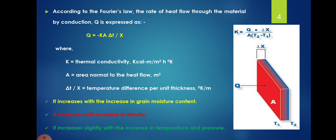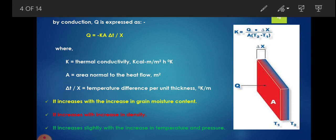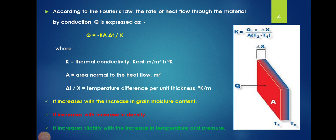The rate of heat flow is expressed as: q = -k × A × ΔT/x. Where k is the thermal conductivity with units kcal·m/(m²·hr·°K), also expressed as W/(m·K). A is the area normal to heat flow in m². ΔT/x is the temperature difference per unit thickness in °K/m. From this Fourier's equation, thermal conductivity k is calculated as: k = q × x / (A × ΔT).